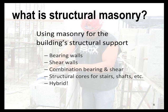Structural masonry is using masonry for the building's structural support. We're talking about bearing walls, shear walls, maybe a wall that does a combination of bearing and shear. Possibly the structural cores for shafts, stairs, etc., in a frame building. There's also hybrid masonry and steel construction methods, and all these tips will apply in some capacity, depending on the configuration, to those materials.